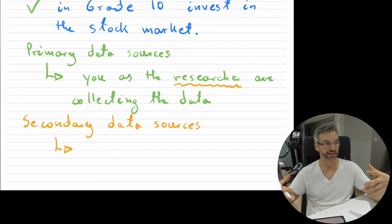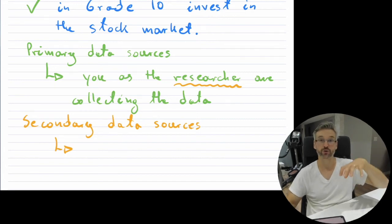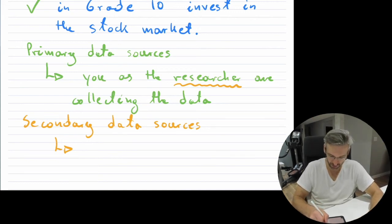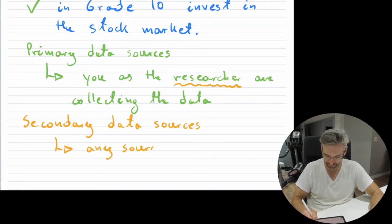That gives you an idea what a secondary data source is, because when you yourself cannot go out and actually find the information yourself, you are no longer the primary data source collector, you are now searching out for secondary data sources. So here we can put any source other than the researchers themselves, the researcher themselves.